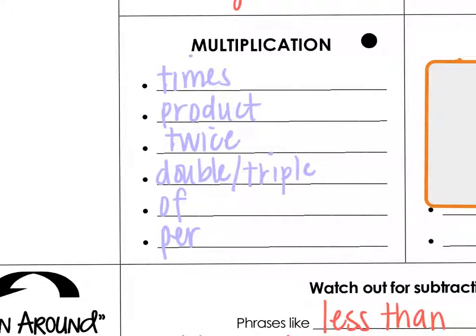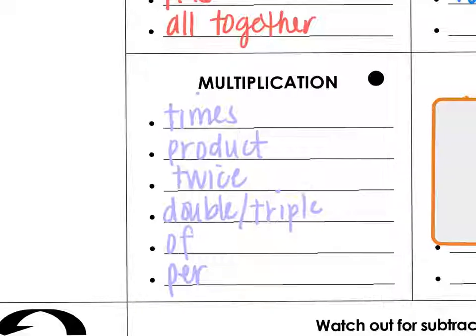For multiplication, words like times, product, twice, double, triple—that's like multiplying by 2, triple, multiplying by 3. We did quadruple the other day. Of means multiply, per, $5 per shirt. That's multiplication as well.